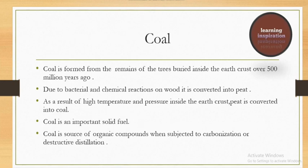Starting from coal. Coal is formed from the remains of trees buried inside the earth crust over 500 million years ago. 500 sal pehle, jo bhi earth ke anndar trees, wood tha, uska remains niche jata raha. Uske oper bacterial actions hohe, chemical actions hohe, jiski wajah se wo wood finally coal mein convert hoa. Sab se pehle, janaab, wood zameen ke anndar chala gaya due to the passage of time. Uske oper bacterial chemical action hoha, jiski wajah se peat mein convert hoa.